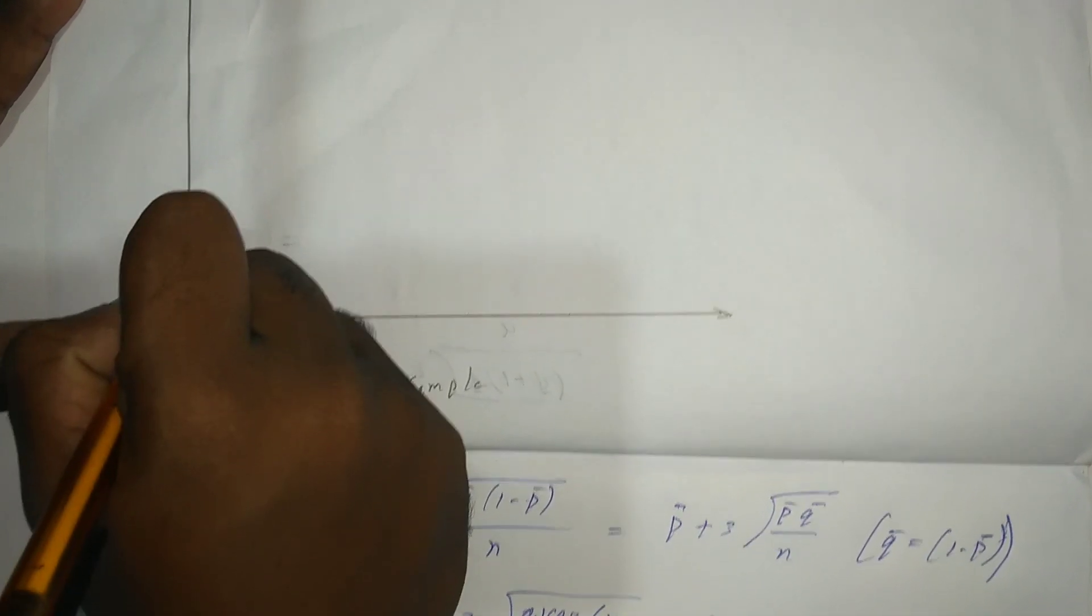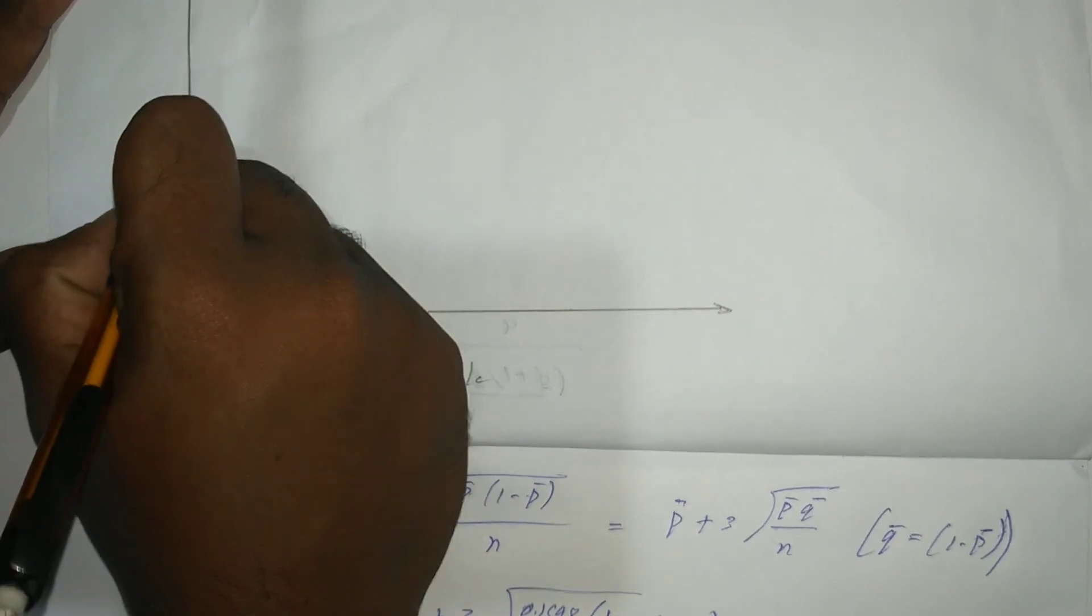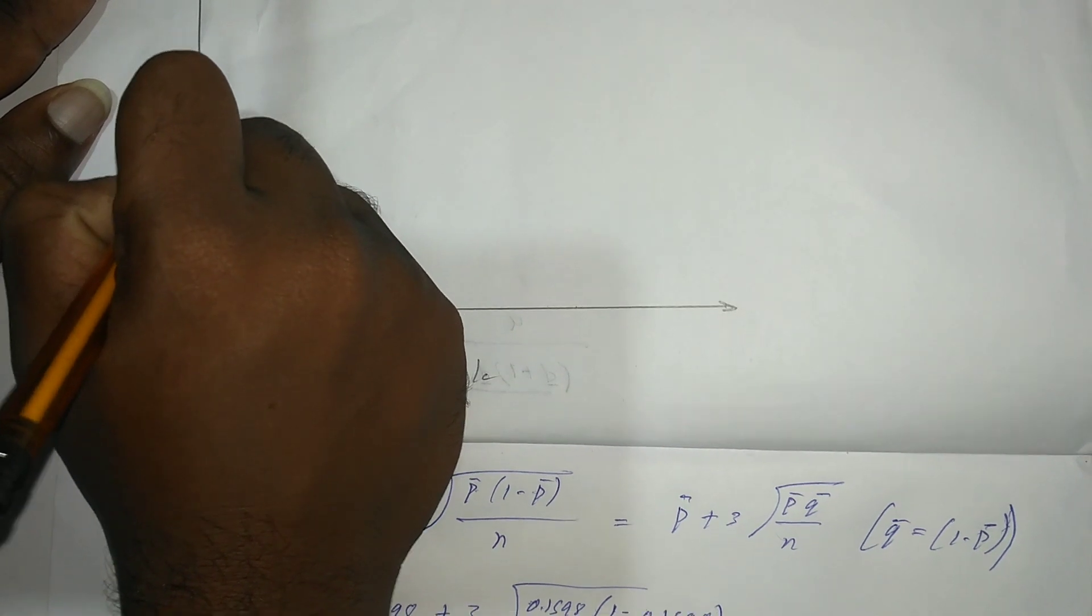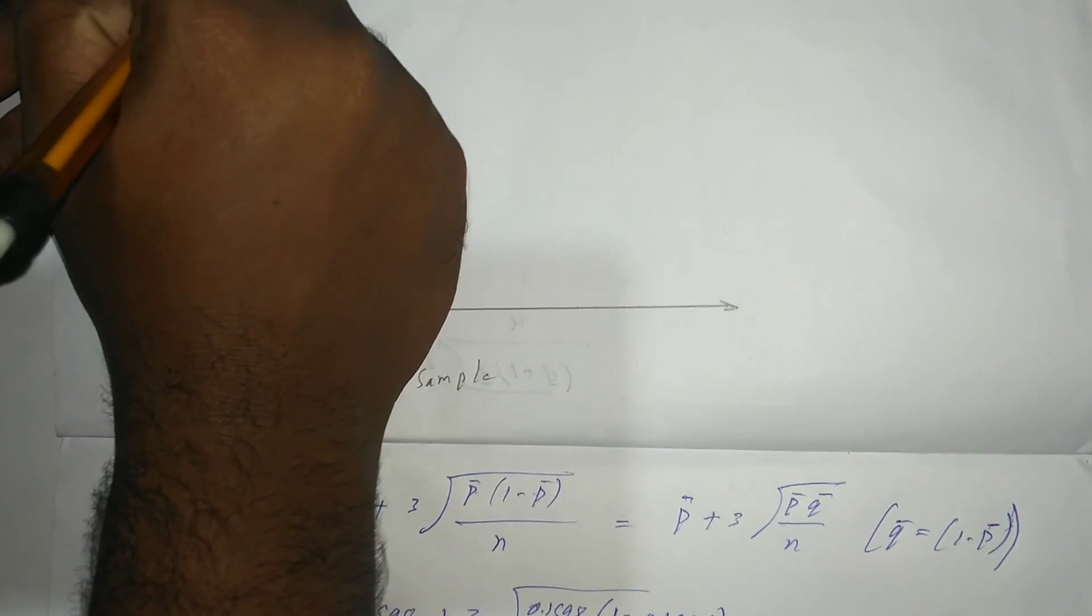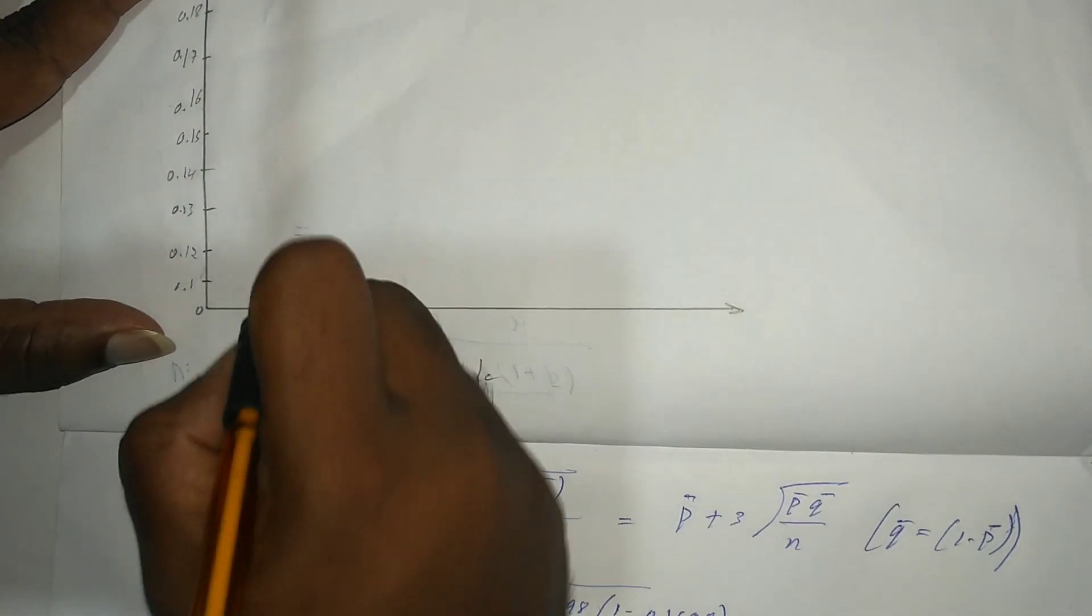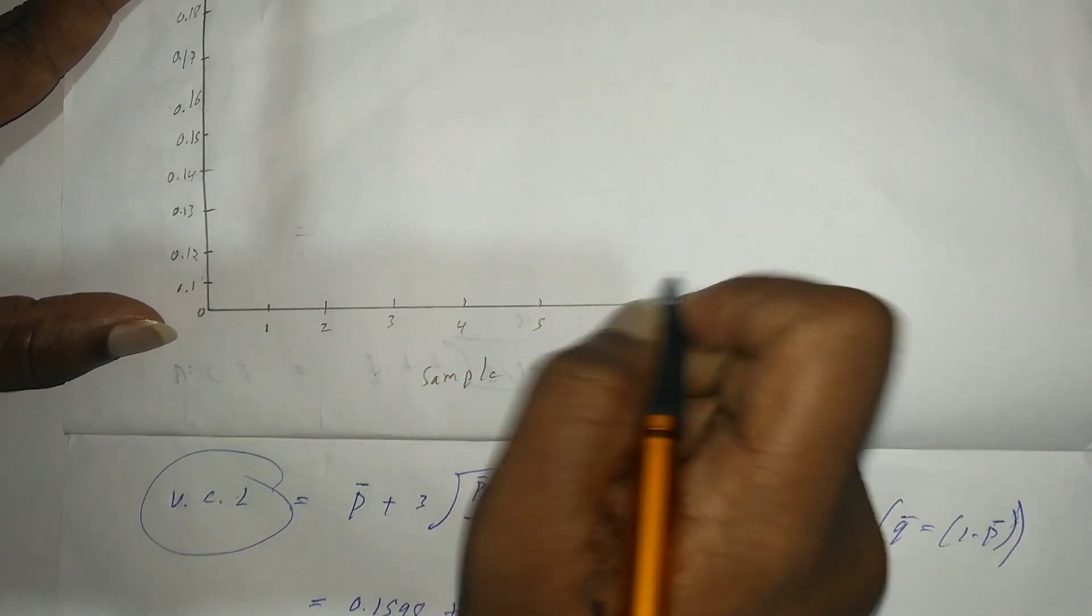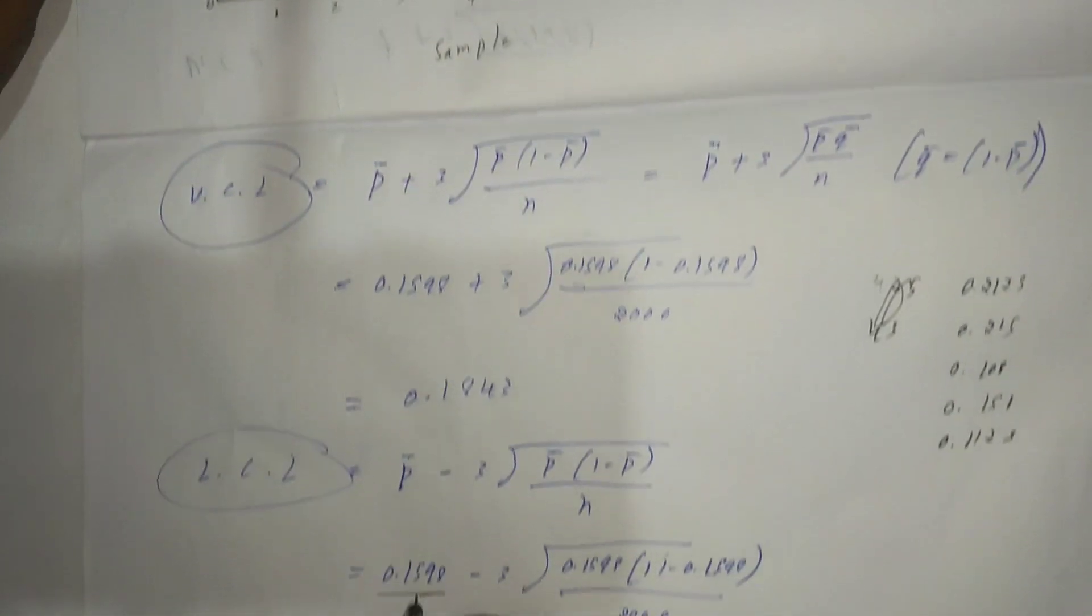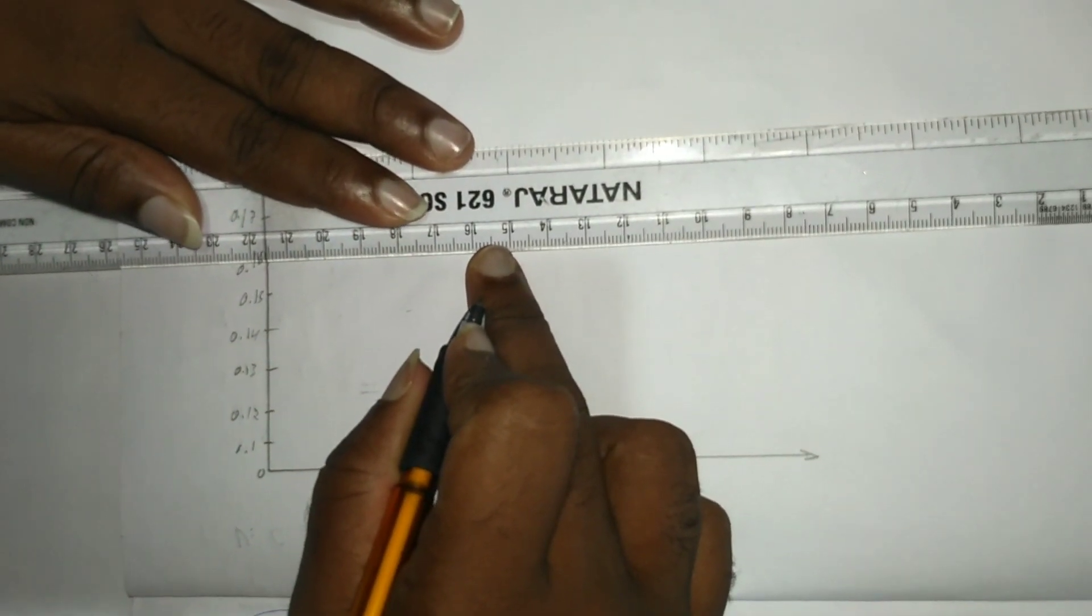These values are between 0.12 and 0.2, so take the scale as 0.13, 0.14, 0.15, 0.16, 0.17, 0.18, 0.19. The samples are 1 to 5. Then our middle control line p-bar equals 0.1598. It is a straight line. The central line is a straight line.